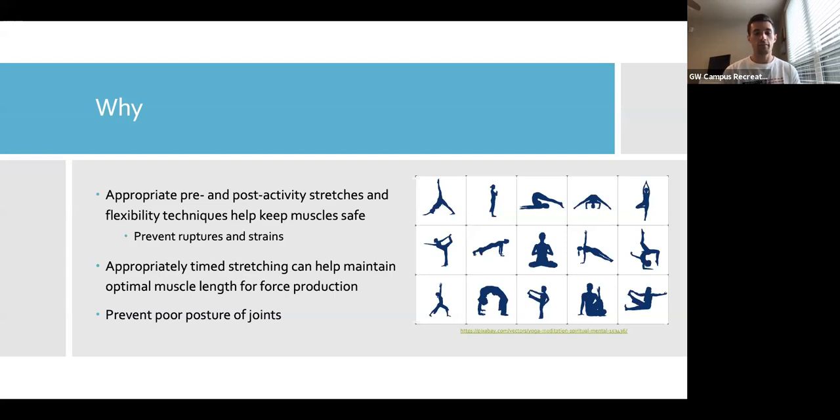but also more pliable and elastic and resistant to any sort of perturbations or activities. Appropriately timed stretching can help maintain optimal muscle length for force production. For those of you who like to strength train to end up building strength to get stronger, maintaining optimal muscle length helps to do that. It's not something that people typically think of, but maintaining appropriate muscle length helps for optimizing force production. You also want to prevent poor posture of joints. What I mean by that is not only your spinal posture and the way that you stand, it can have an effect on that. But also if you don't appropriately maintain flexibility and range of motion of different joints and body segments, you can develop things called contractures and you can limit your range of motion, which can end up making you less functionally capable and actually reduce your ability to do certain activities. So in order to maintain that, we just want to make sure that you have full range of motion and flexibility.